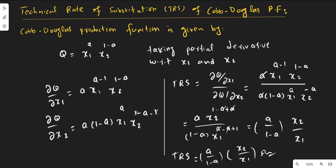We will later use this technical rate of substitution for the derivation of the elasticity of substitution for the Cobb-Douglas production function. Remember this technical rate of substitution — it will be used later. This is how to derive the technical rate of substitution for the Cobb-Douglas production function. Thank you for watching.